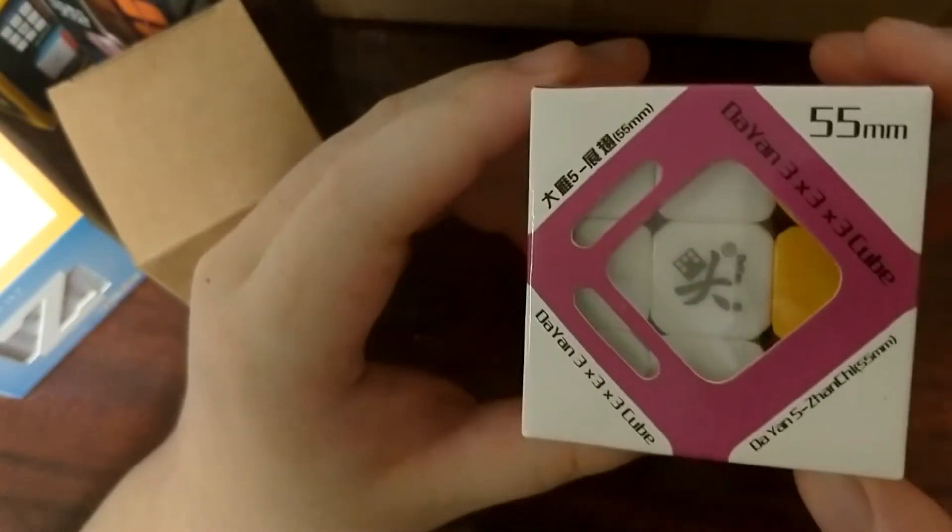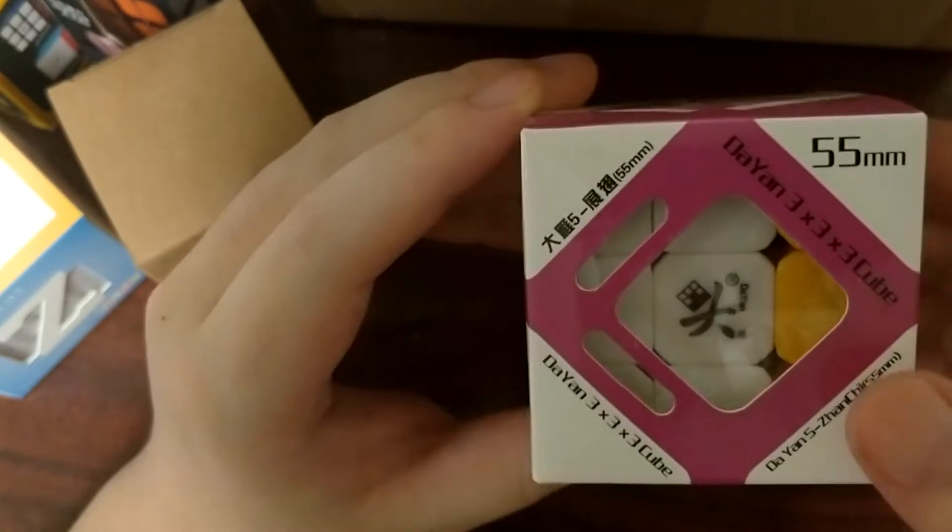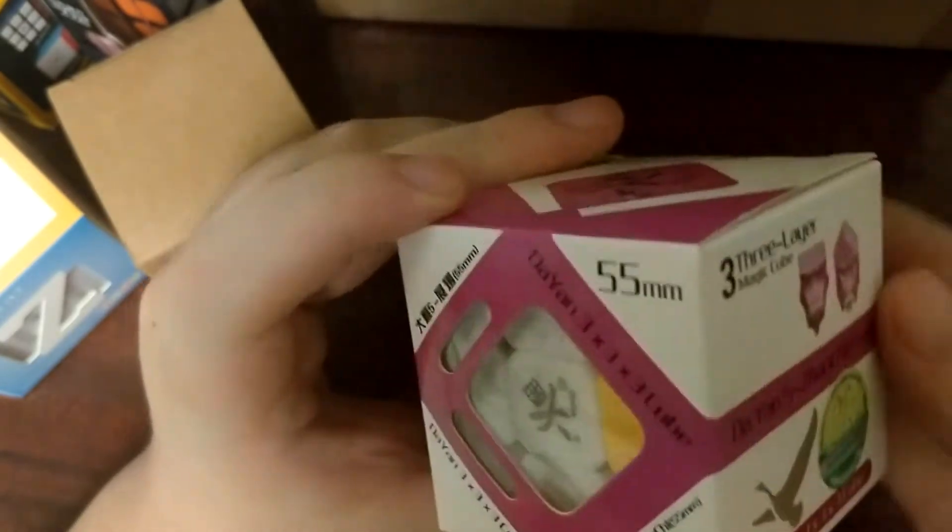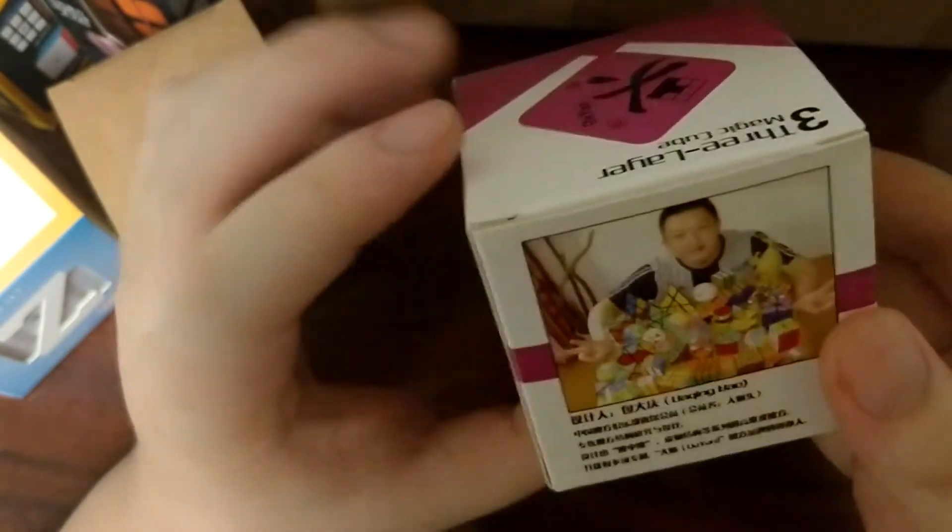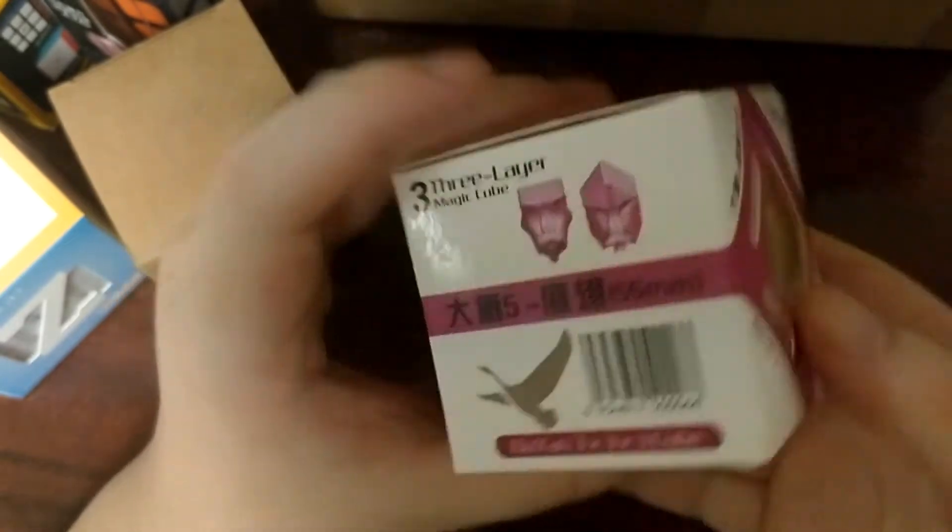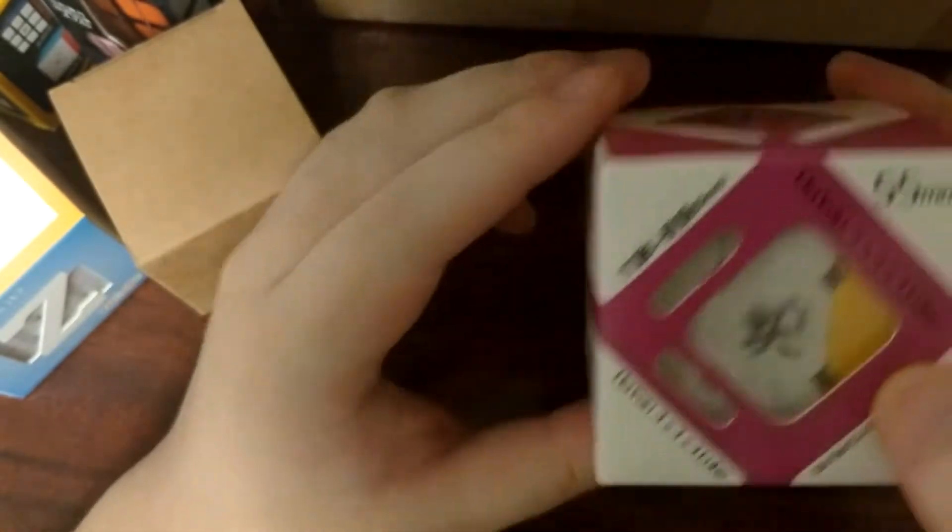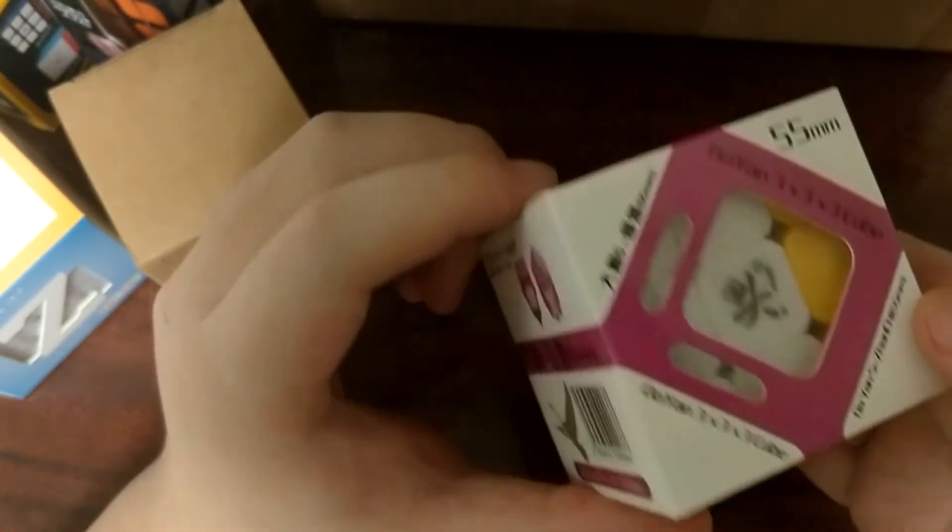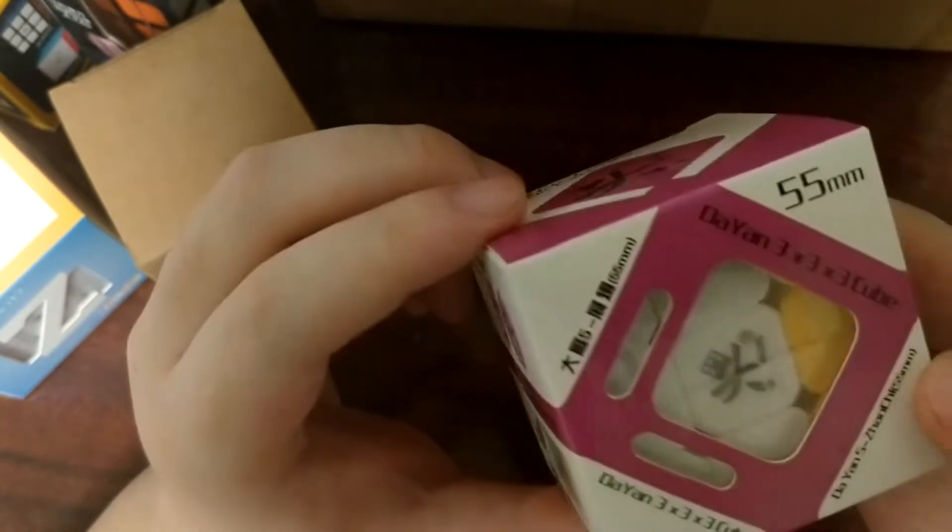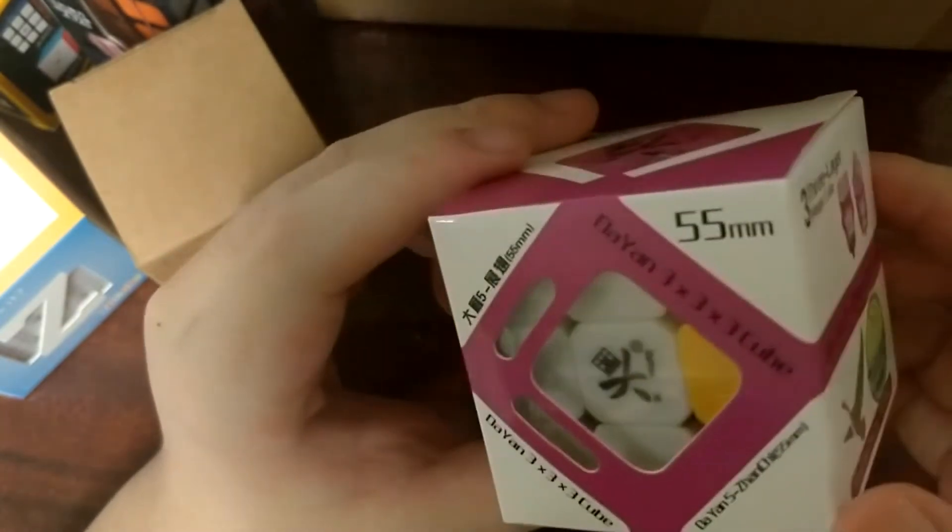Here we go. Here is a Diane Zanchi 55mm. It does come in the nice Diane box. It's interesting. It looks like the cube is not fully solved.